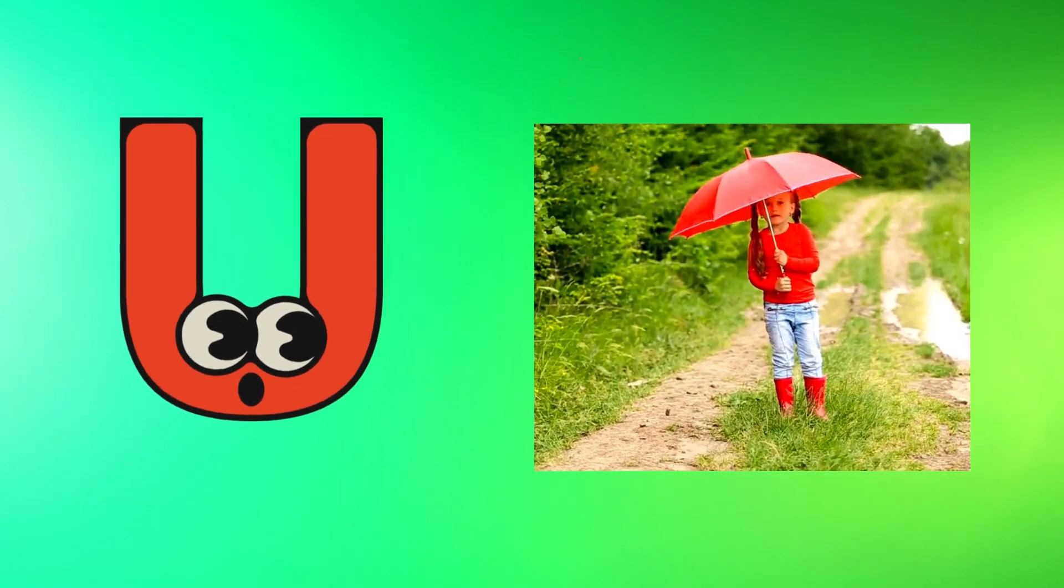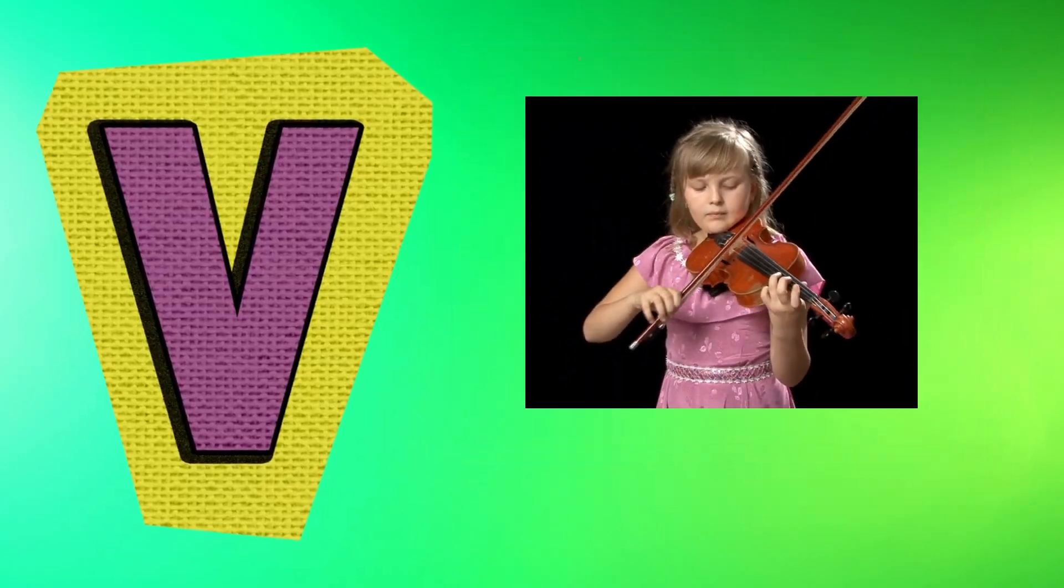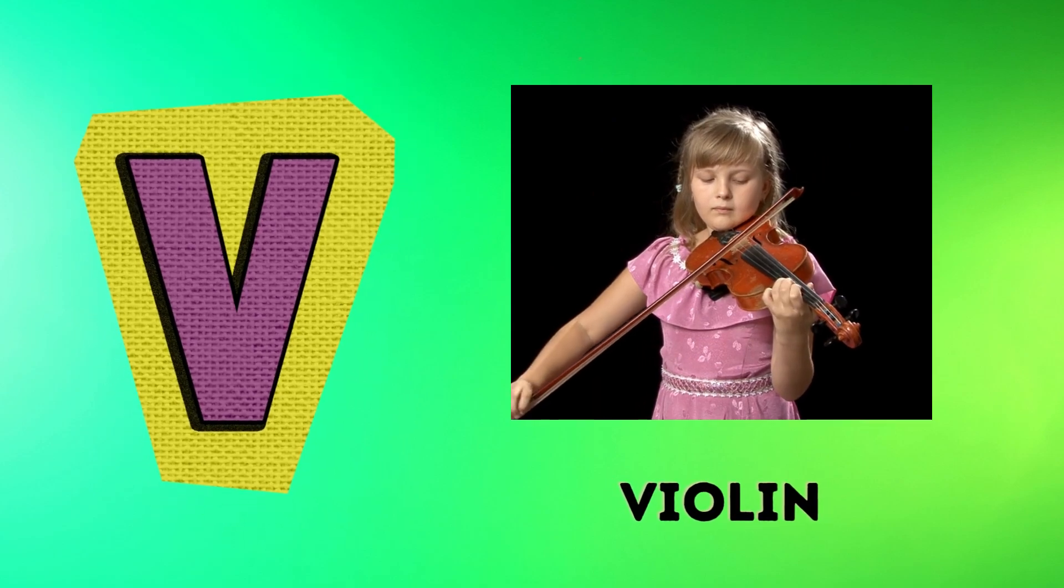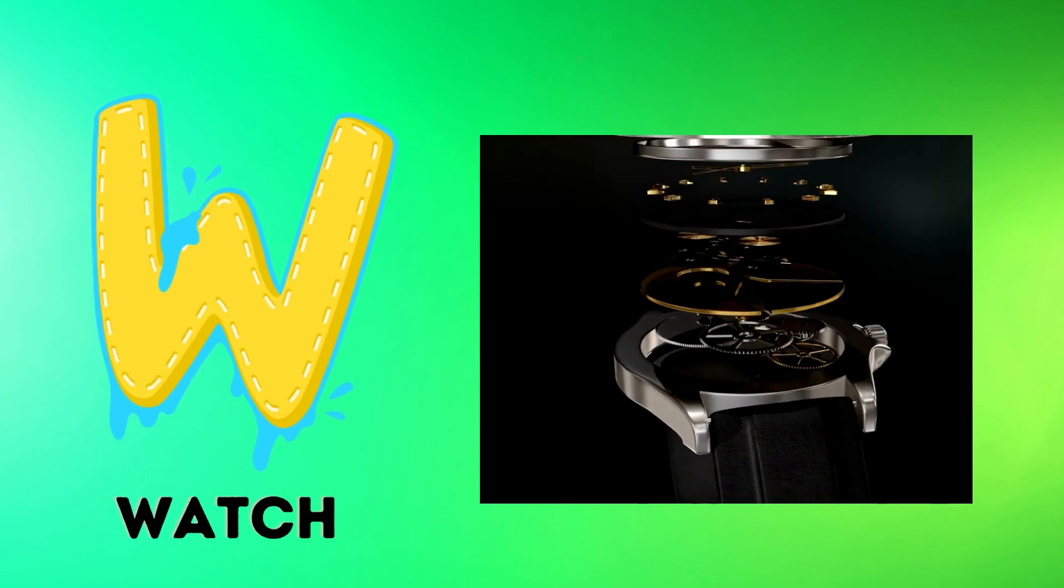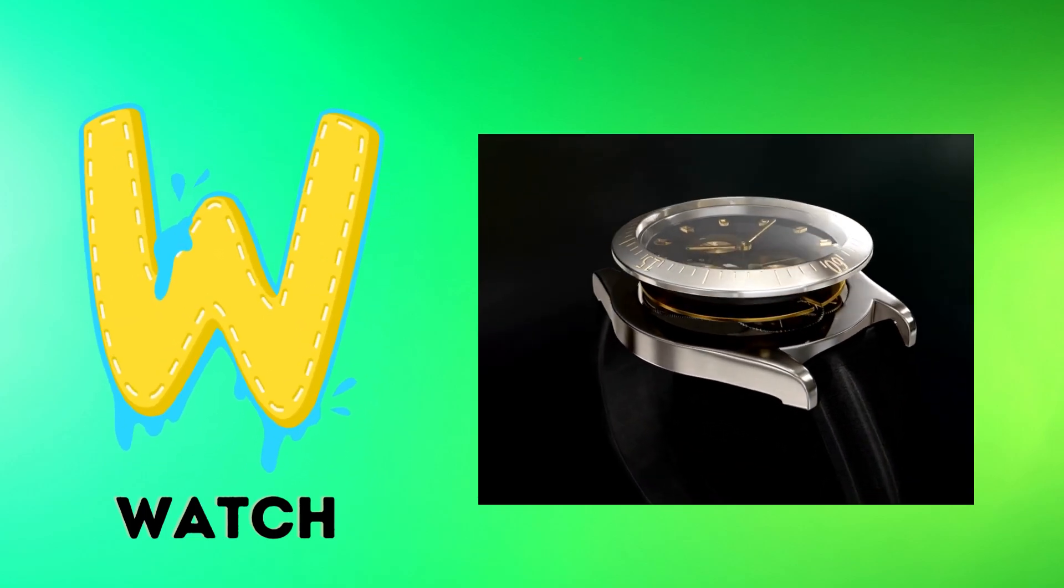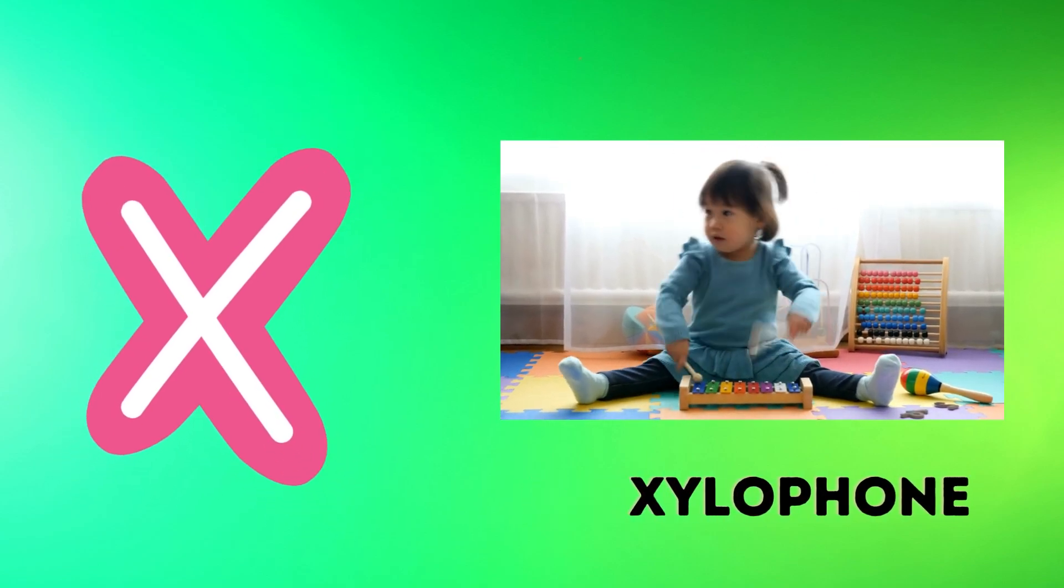U is for umbrella, u-u-umbrella. V is for violin, v-v-violin. W is for watch, w-w-watch. X is for xylophone, x-x-xylophone.